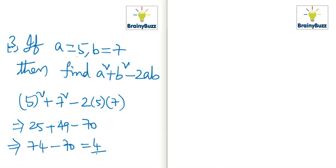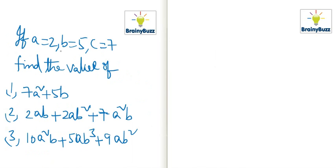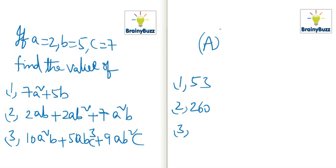Like this, we can find the values at different points. Now for exercise: if a equals 2, b equals 5, and c equals 7, find the values of: 7a squared plus 5b, 2ab plus 2ab squared plus 7a squared b, and 10a squared b plus 5ab cubed c plus 9ab squared c. The answers are 53, 260, and 5100 respectively.